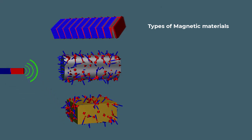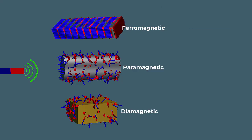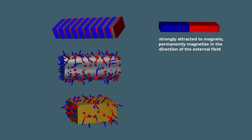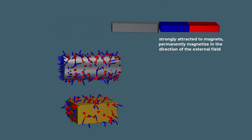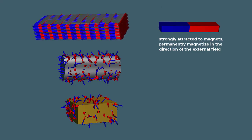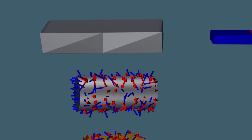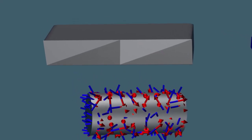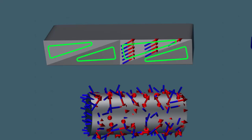Magnetic materials are classified based on their response to an external magnetic field. They can be categorized into three main types: ferromagnetic, paramagnetic, and diamagnetic. Ferromagnetic materials are strongly attracted to magnets and can be permanently magnetized. In a ferromagnetic material, the magnetic moments of individual atoms in a tiny region are all aligned in the same direction.